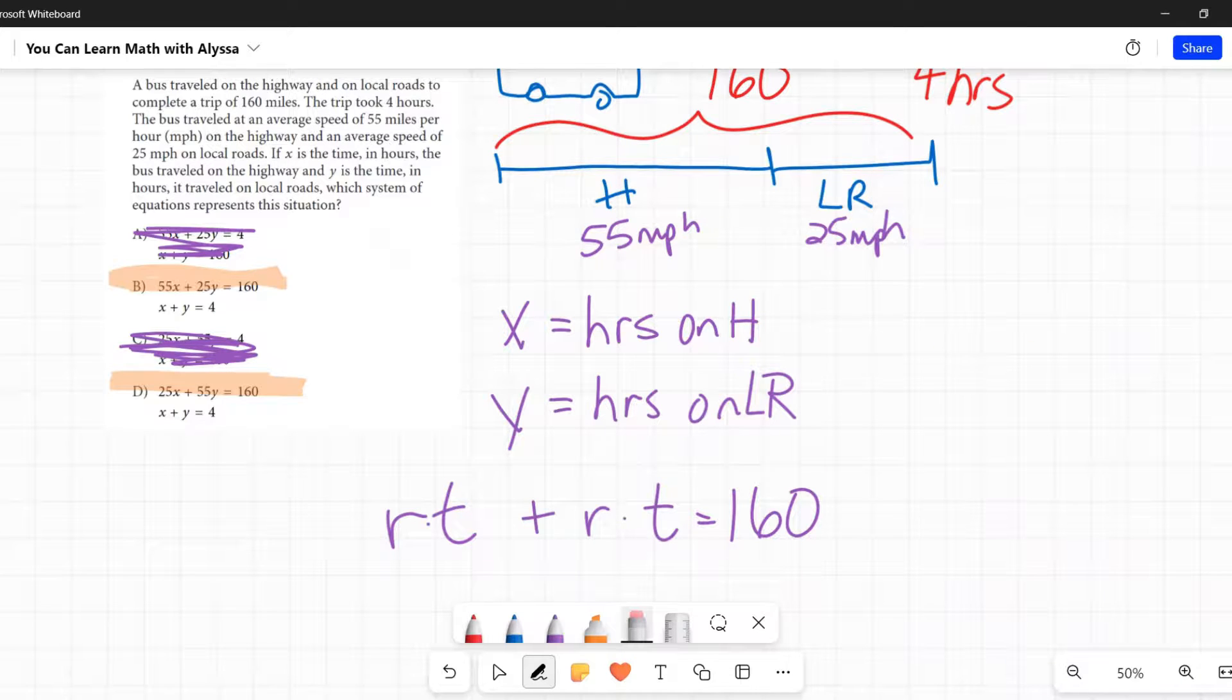Let's look at them. On the highway was 55 miles per hour and it was x hours. So my first one, the rate was 55 miles per hour and my time was x hours. 55 times x, that's how many miles were traveled on the highway. Then the rate times the time, what was the rate on the local roads? The rate on the local roads was 25 miles per hour and the time on the local roads was y hours. And there we go, 55x plus 25y equals 160. So B is my answer.